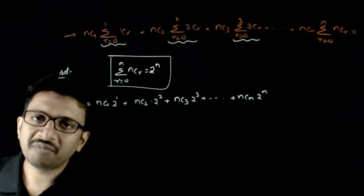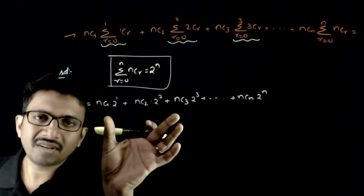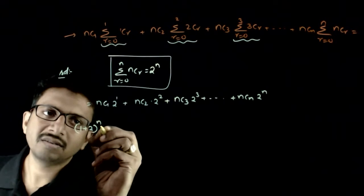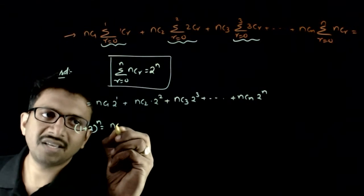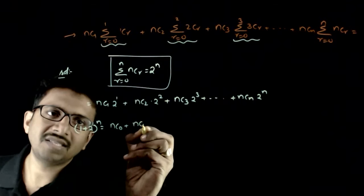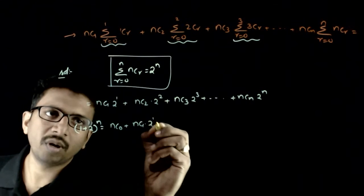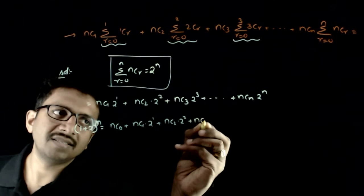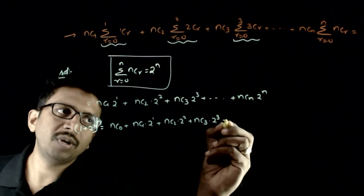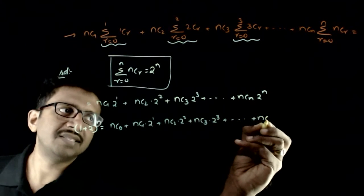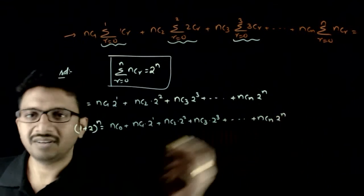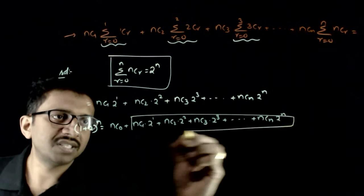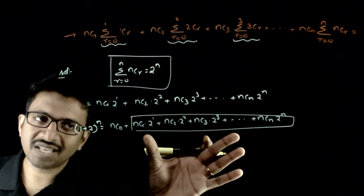Does this equation look familiar to you? It is a very familiar equation. What is (1+2) power n? It is NC0 plus NC1 times 2 power 1, plus NC2 times 2 squared, plus NC3 times 2 cubed, and so on, plus NCn times 2 power n. This is exactly the expression which is asked.